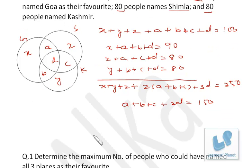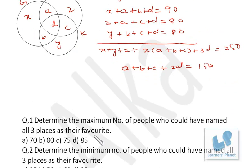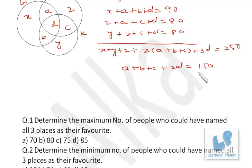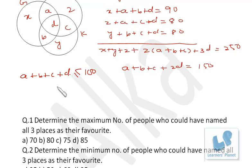Now let's take the questions one by one. These questions are based on maximum and minimum values. The first question: determine the maximum number of people who could have named all three places as their favorite. We need to find the maximum value of d, since d represents people who liked all three places. We have a + b + c + 2d = 150, and also a + b + c + d ≤ 100, since the total cannot exceed 100.